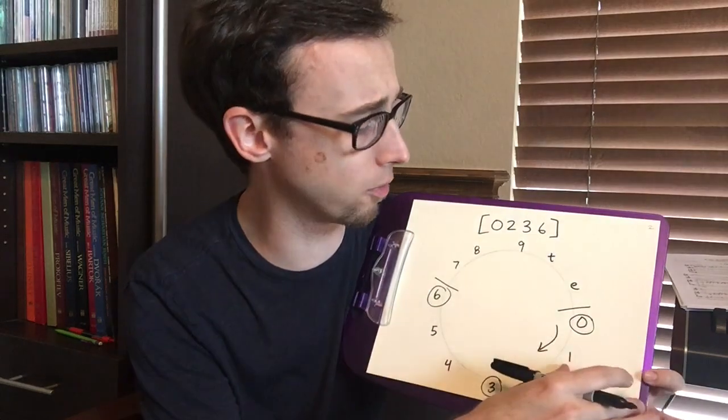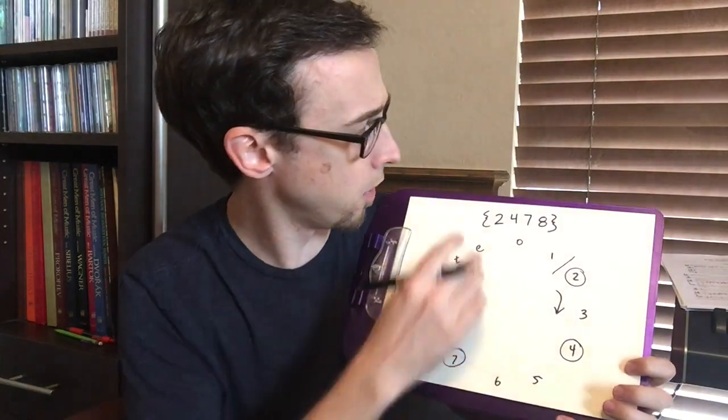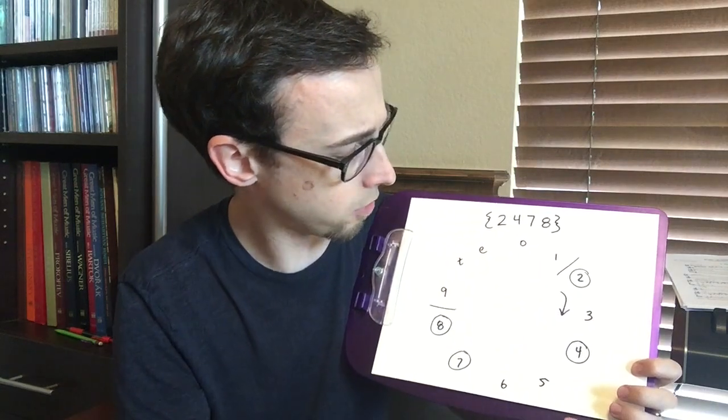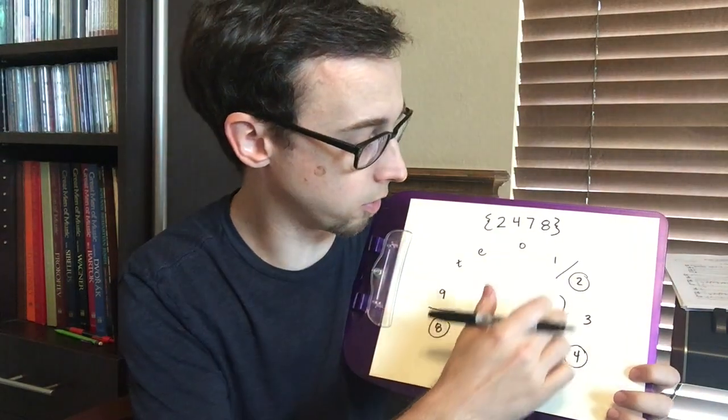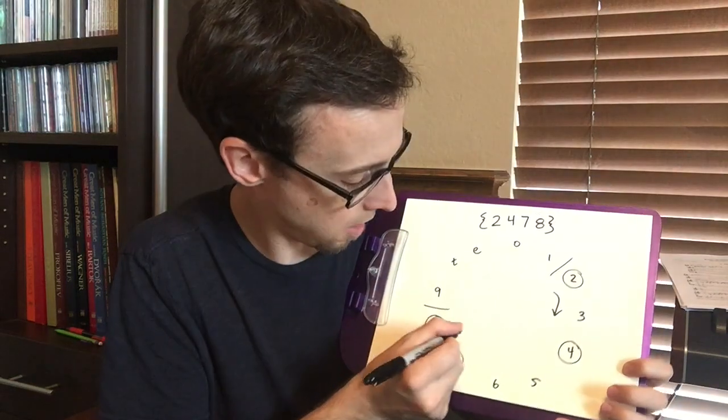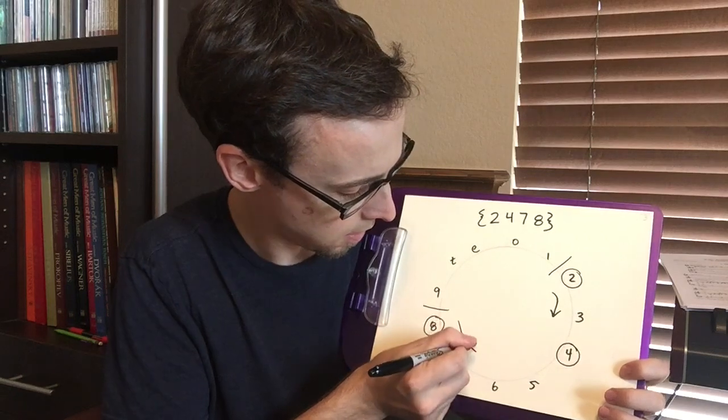Let's look at another example here. So here we have our normal order of 2478. We found that by reading clockwise, but again to find prime form we want to consider clockwise reading and counterclockwise. We're going to start at the eight since that's the last note in our sequence and run this way.